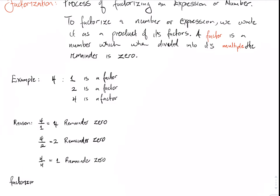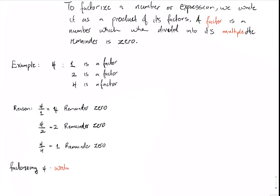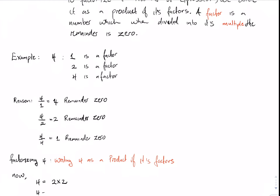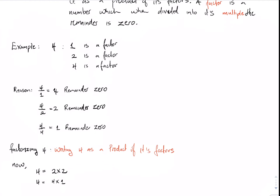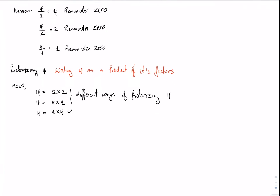If we were to factorize the number four, we want to write four as a product of its factors — meaning we can say four equals two times two, or four equals four times one, or one multiplied by four. Looking at four and other numbers, we realize there are many ways to factorize a given number.